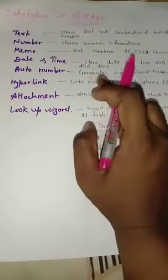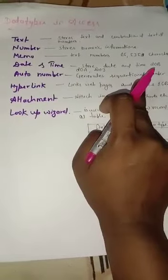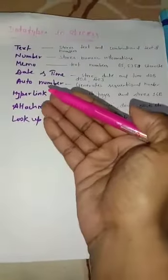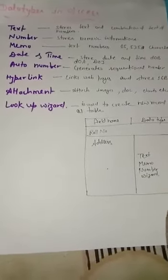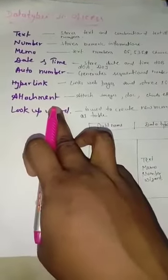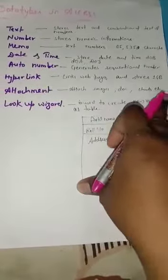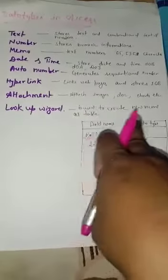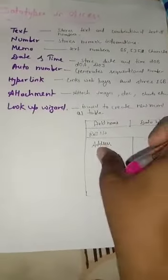Auto number generates sequential numbers. Suppose we want to make a 1 to 10 series, it will give sequential numbers from 1 to 10. Hyperlink links web pages and stores data. Attachment allows us to attach different types of things to the table, such as images, documents, charts, etc. Lookup wizard is used to create a new table within a table.